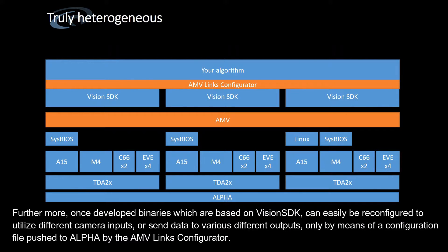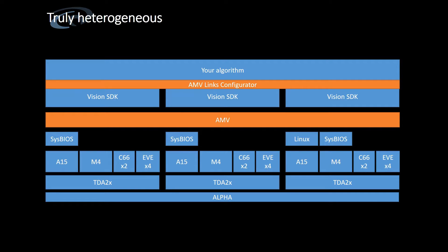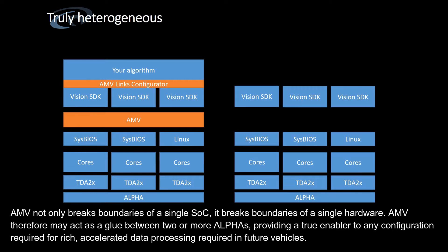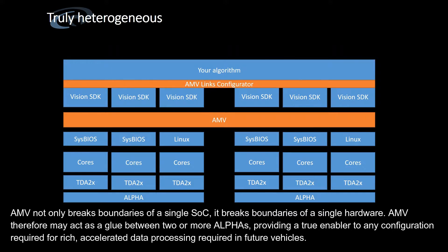Furthermore, once developed, binaries based on Vision SDK can easily be reconfigured to utilize different camera inputs or send data to various different outputs — only by means of a configuration file pushed to Alpha by the AMV links configurator. AMV not only breaks boundaries of a single SoC, it breaks boundaries of a single hardware. AMV may therefore act as a glue between two or more Alphas, providing a true enabler to any configuration required for rich, accelerated data processing required in future vehicles.